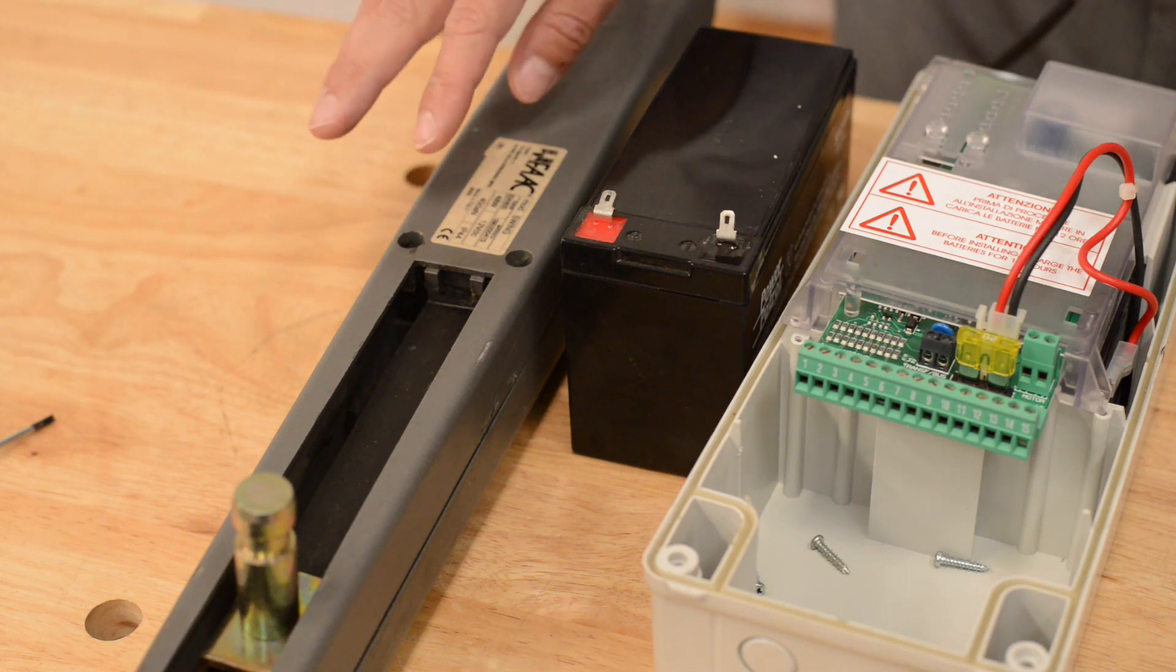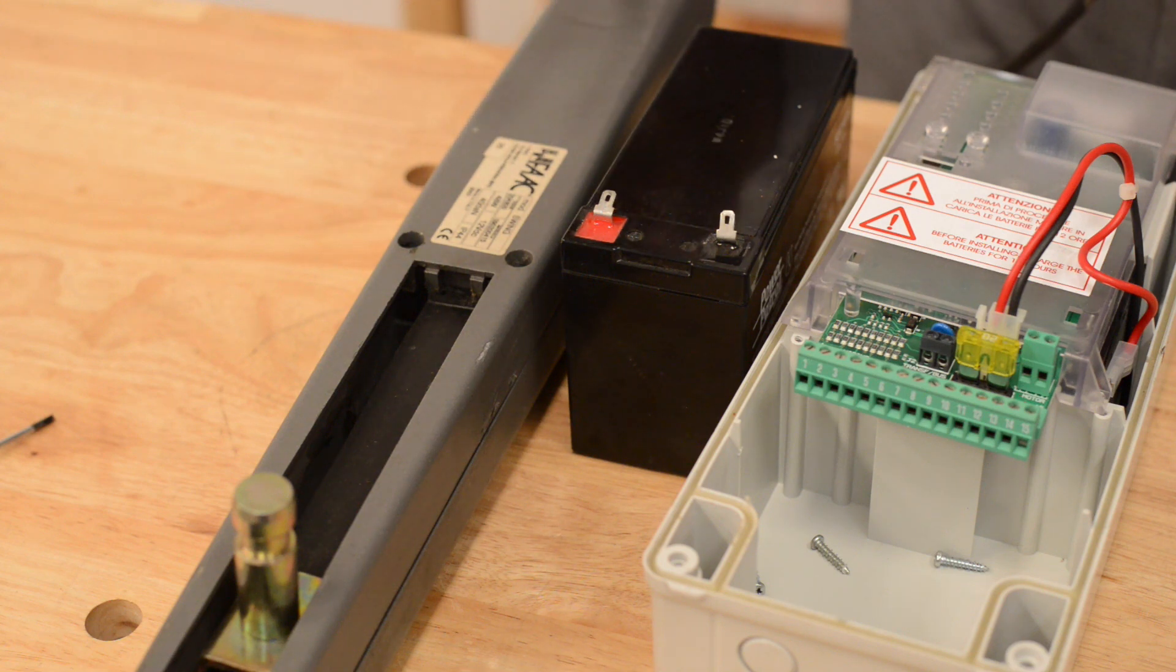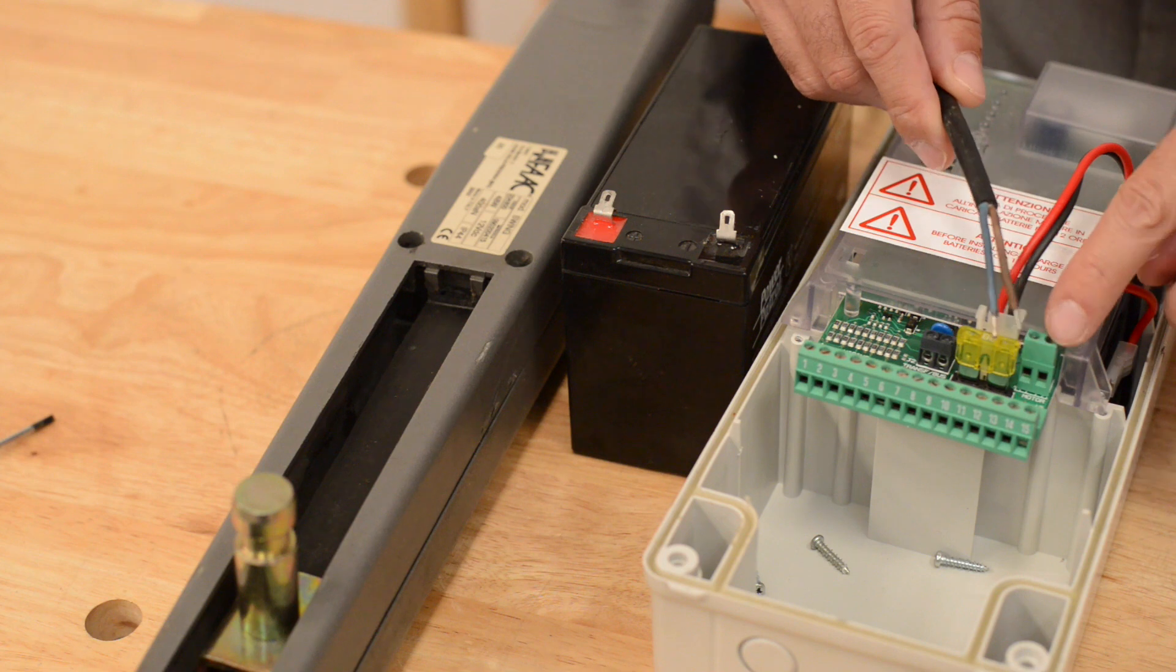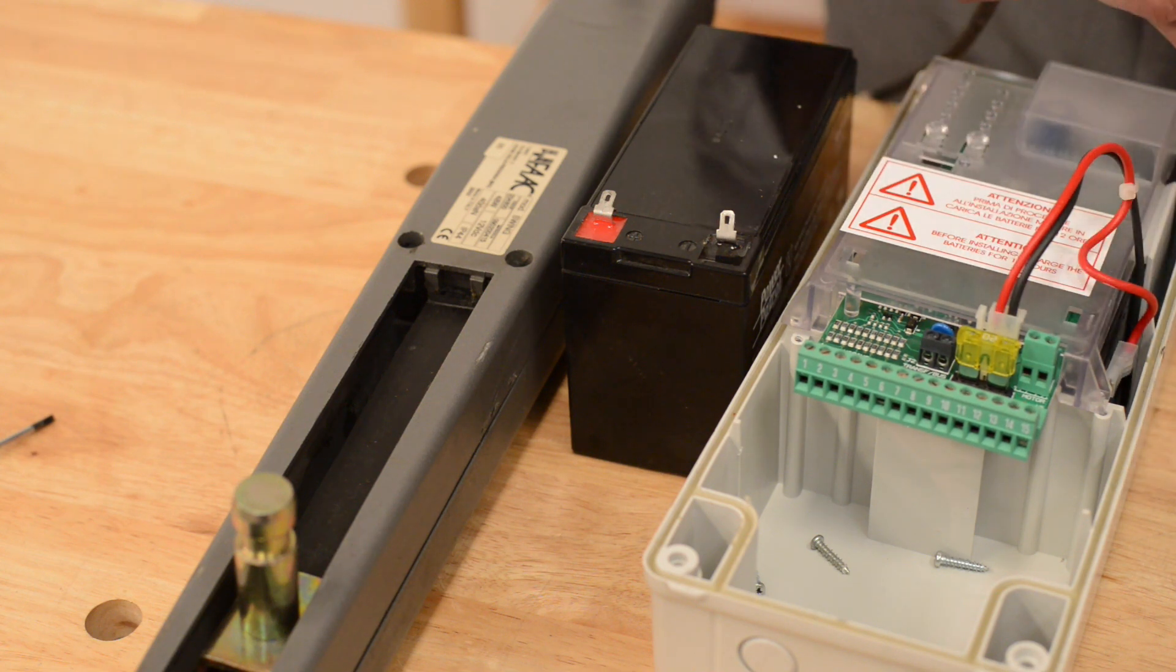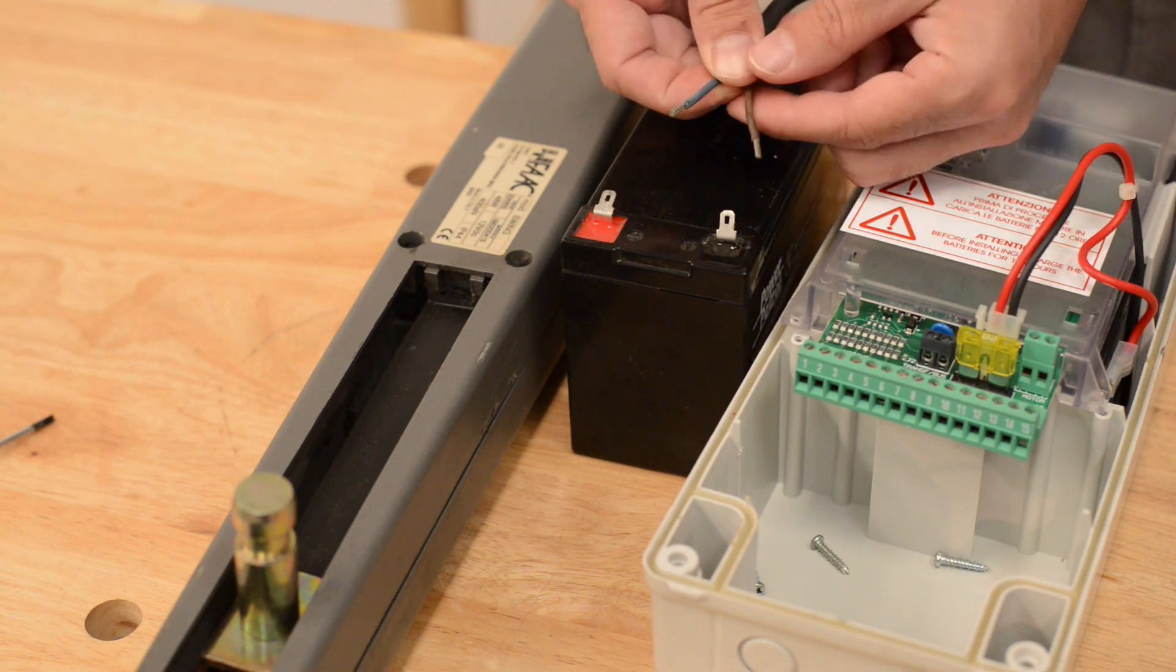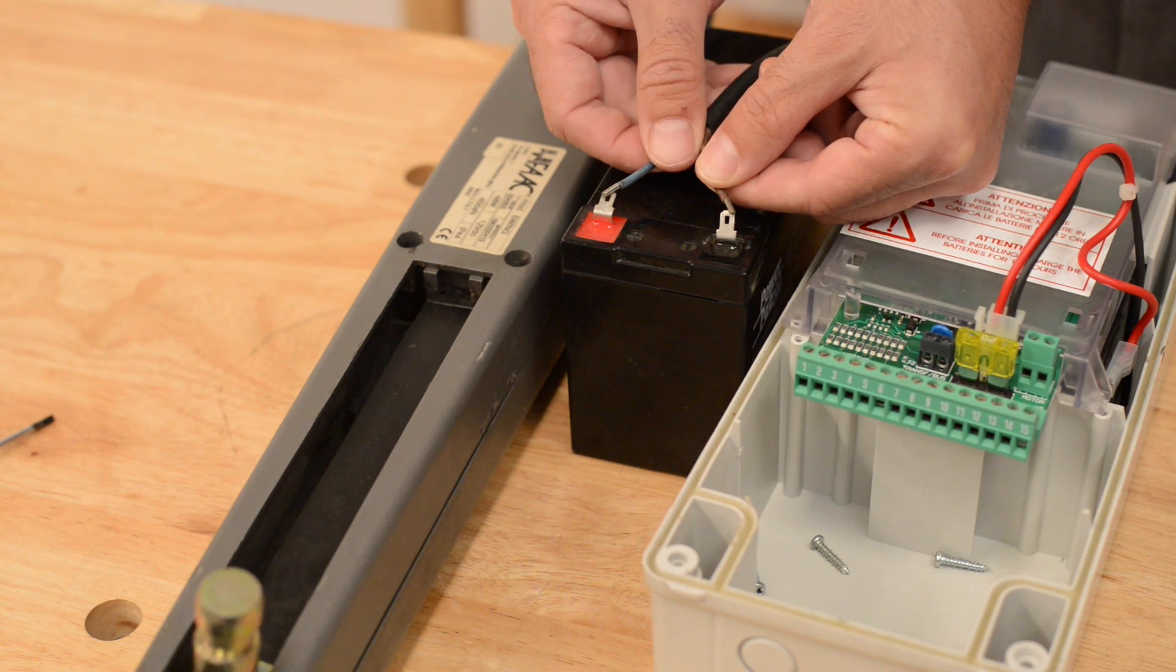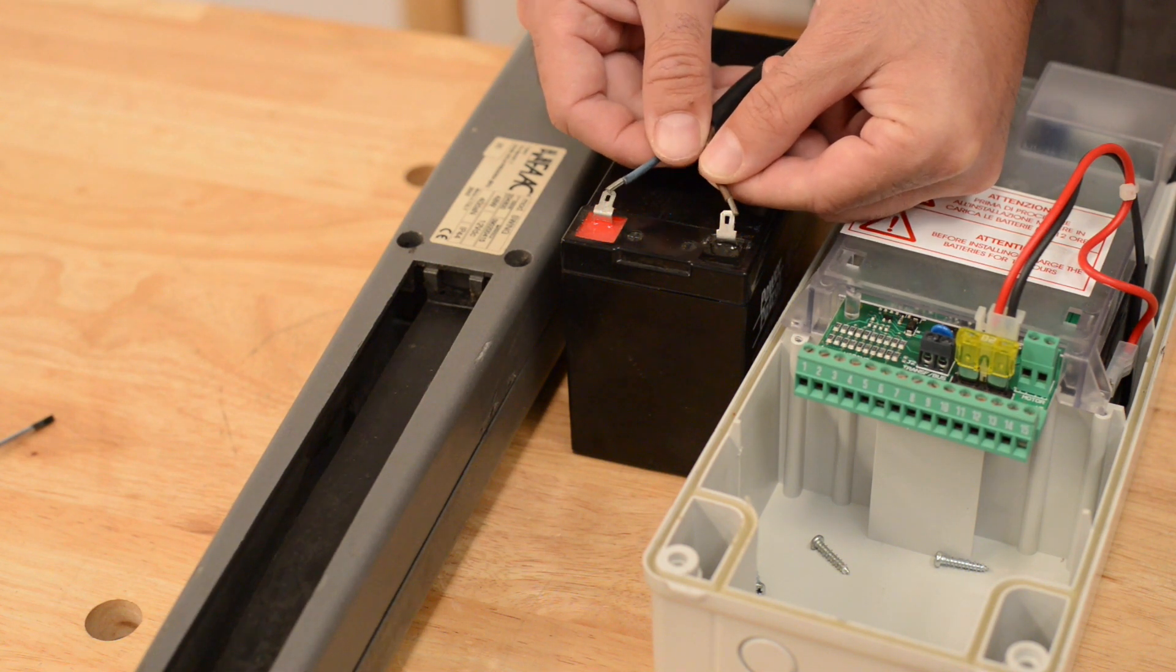This means you can test the motor really easily to know if the power is able to get to the motor and make it turn. If you take the blue and brown wires off of the motor terminal and touch them directly to a good battery, you will see the pin move.